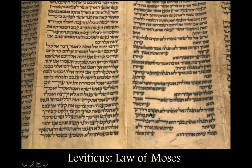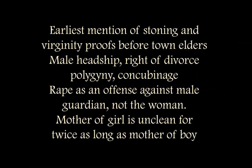Then we have Leviticus and the Laws of Moses. There's a lot of very strong asymmetry between men and women in terms of rights over their bodies and the differential in terms of sexual expression. Virginity proofs are referred to. We have our oldest mention of stoning — though the Mesopotamians might have an older form of that. Headship of the male, unilateral right of divorce by the male, taking several partners, taking concubines. And when a woman is raped, it's treated by law as an offense against the father or the husband, not against the woman. He receives compensation paid to him — she is not.